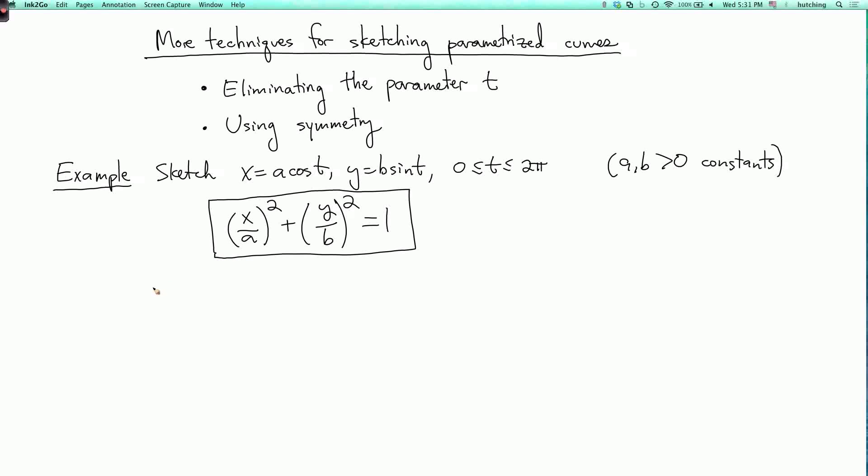Now that we have this equation, we recognize it as the equation of an ellipse. So I can sketch the ellipse in the plane. So when y equals 0, it intersects the x-axis at the points (a,0) and (-a,0). And when x equals 0, it intersects the y-axis at the points (0,b) and (0,-b).